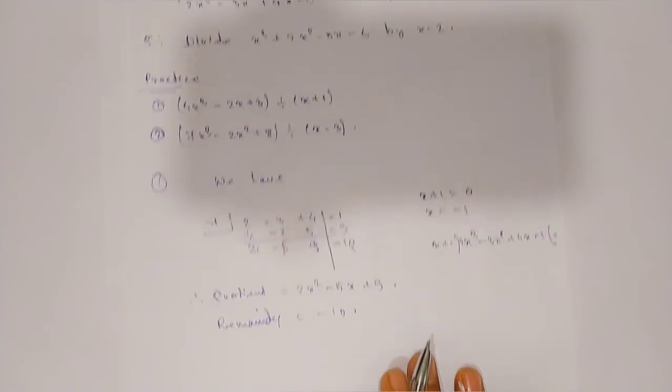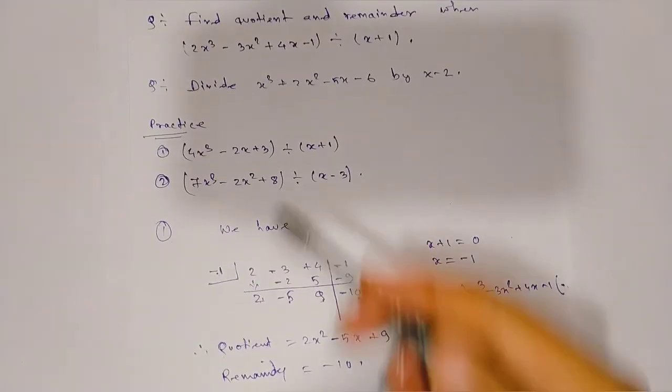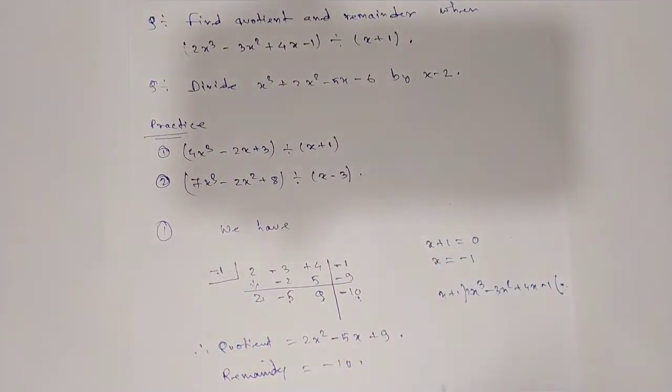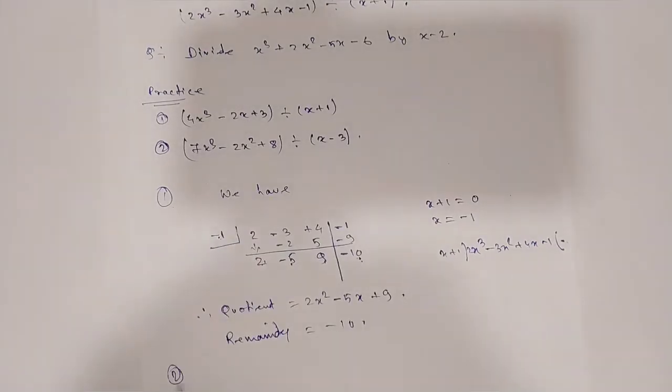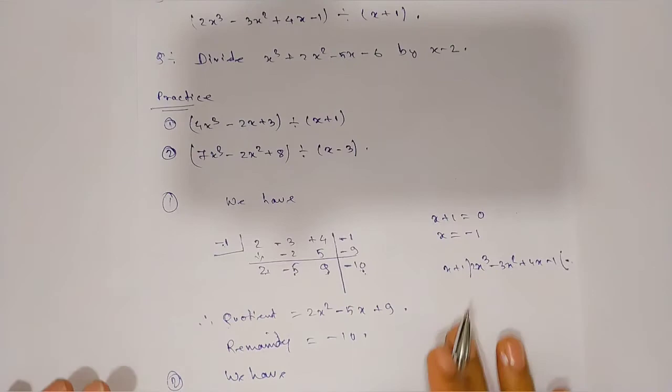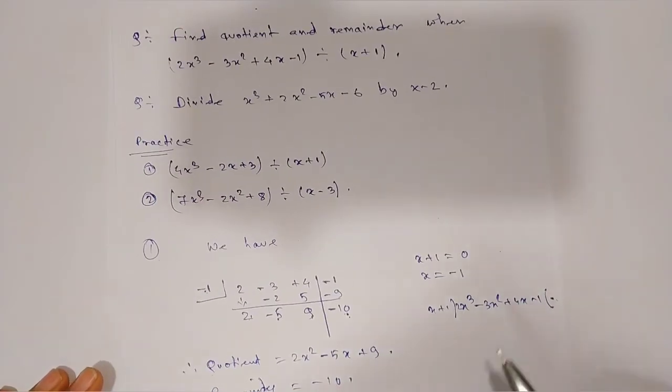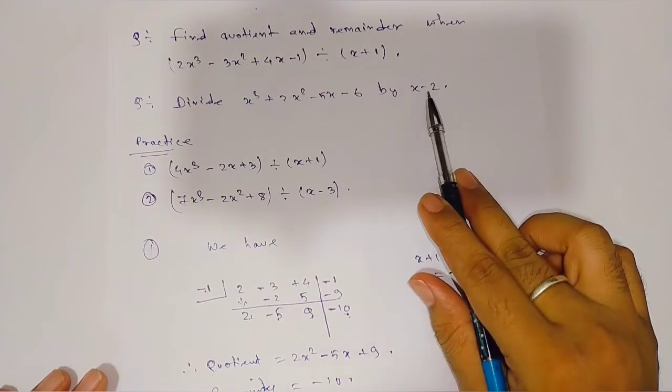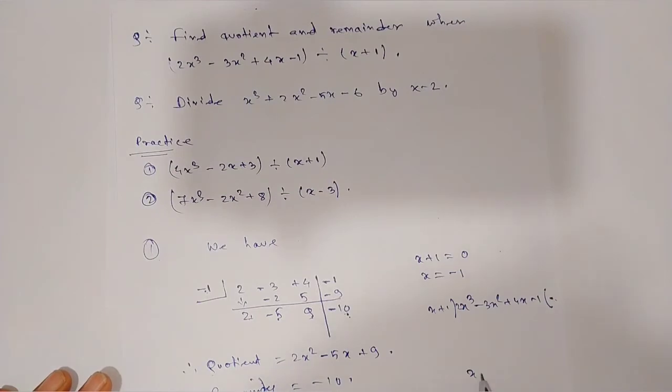Now let's proceed to the second problem. Here we have x minus 2. Compare x minus 2 with 0 to get x equals 2, so we'll take 2 here.